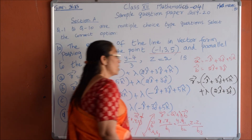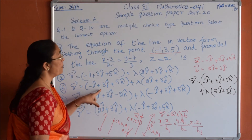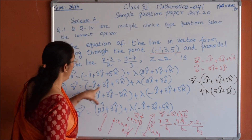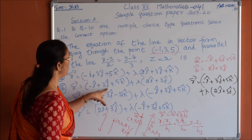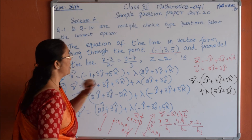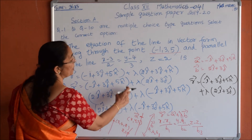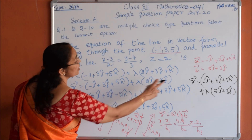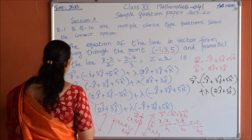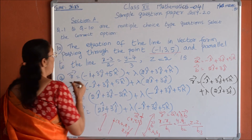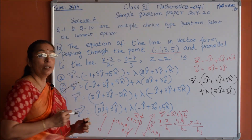Which option? R equals minus i cap plus 3j cap plus 5k cap plus lambda times 2i cap plus 3j cap — option B.